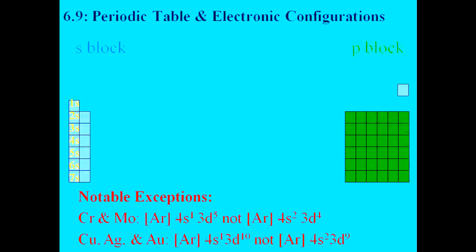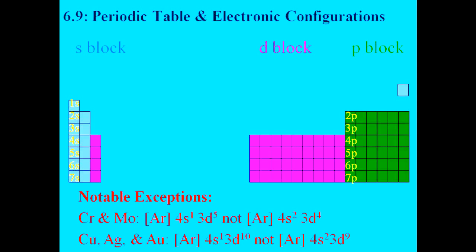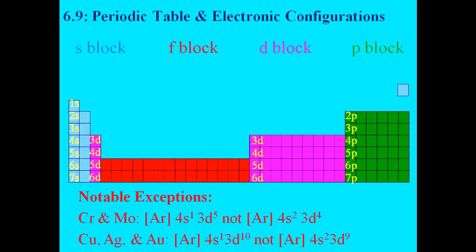Then you have the 6 columns in the P block, and they will be labeled 2P through 7P. Then you have the 10 columns of the D block, and they are labeled 3D through 6D. And then the two columns of the F block, which are 4F and 5F. Knowing these, you can figure out the electron configuration using your periodic table.